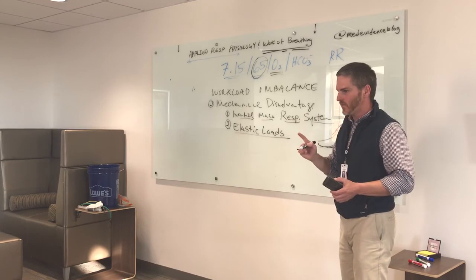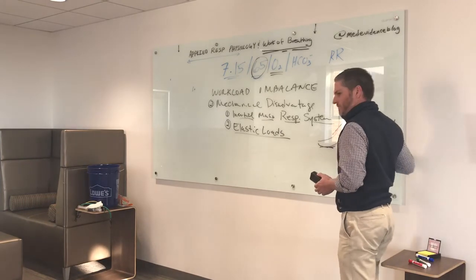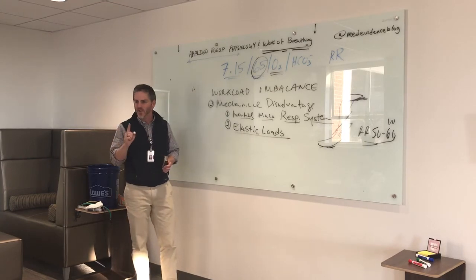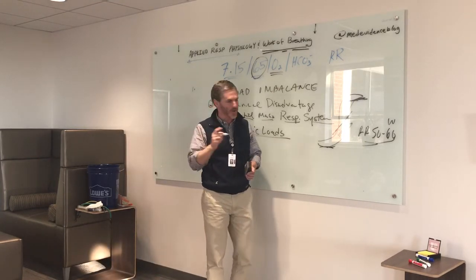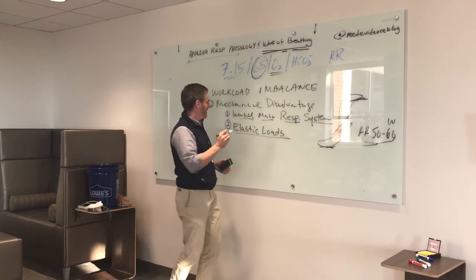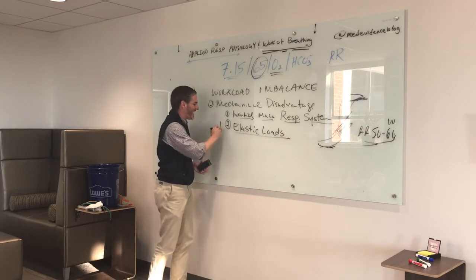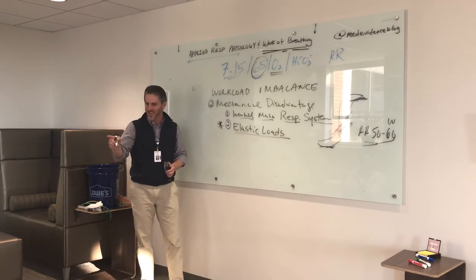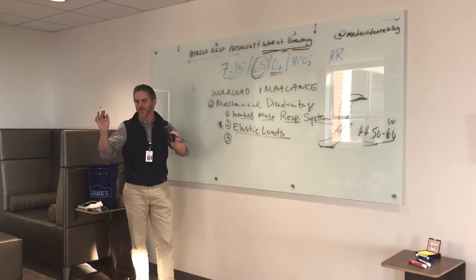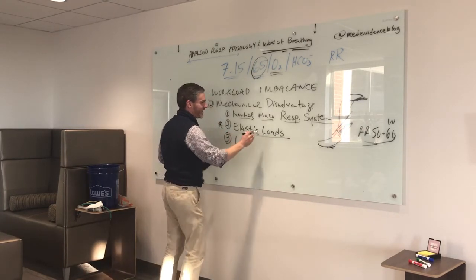IPF patients waiting for lung transplant breathe at rates of 50 to 60, staying in the compliant zone to minimize elastic loads. However, by breathing fast in the most compliant part of the lung they impose a different load on themselves as a trade-off. The key point: anyone with an abnormal chest X-ray has excessive elastic loads compared to someone with a normal chest X-ray.